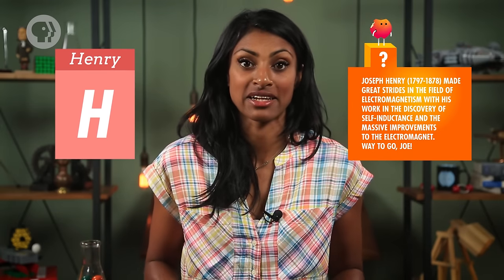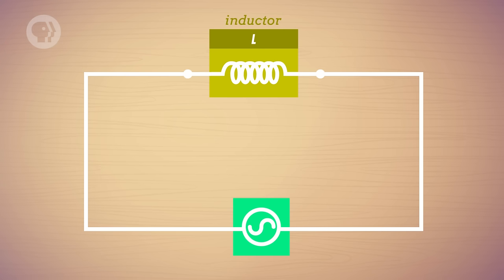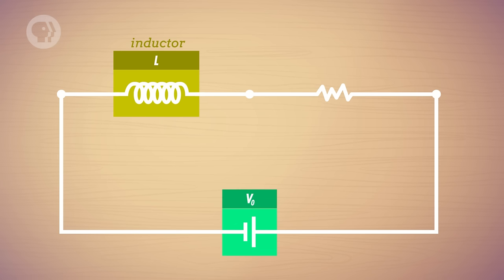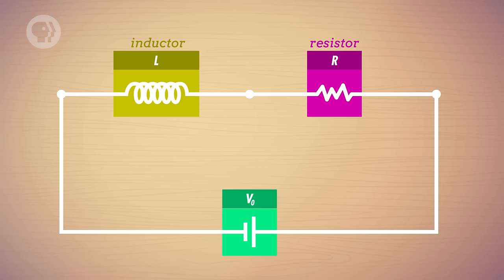Inductance is expressed in units called Henrys. Induction of an electromagnetic force is so useful that engineers make coils designed to maximize their self-inductance — these are called inductors. In a circuit diagram, they look like small coils, because that's pretty much what they are. To get a handle on how inductors work, let's consider one in a DC circuit: an inductor connected in series with a battery of constant voltage V0. Since most inductors have a natural resistance, there's also a small resistor in series. Because we have an inductance L and a resistance R, we call this configuration an LR circuit.